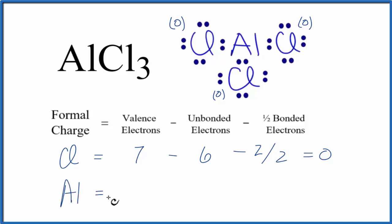Aluminum is in group 13, sometimes called 3A on the periodic table, 3 valence electrons, minus unbonded. All of these electrons here are involved in chemical bonds. So this is 0.